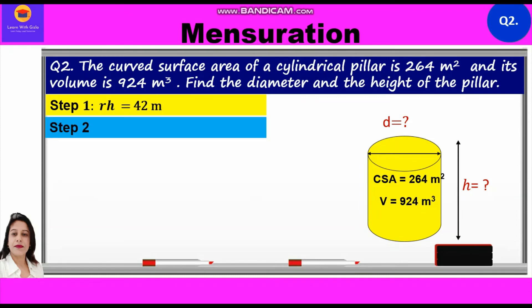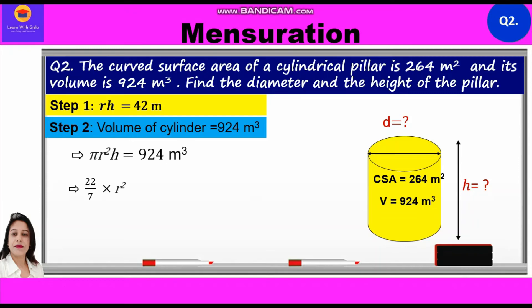In Step 2, volume of cylinder = 924 m³, which implies πr²h = 924 m³. Writing this as (22/7) × r² × h = 924 m³.